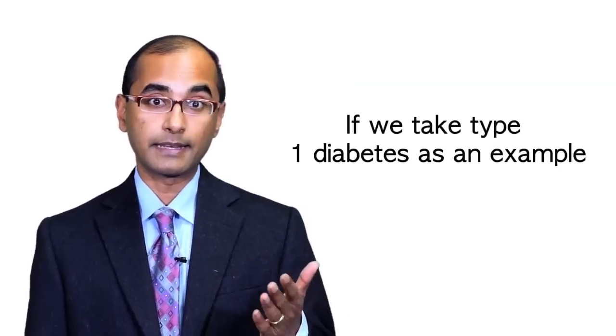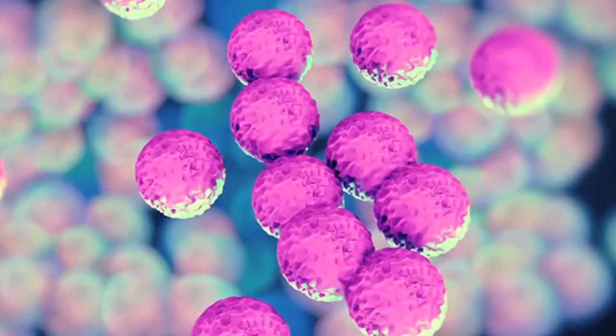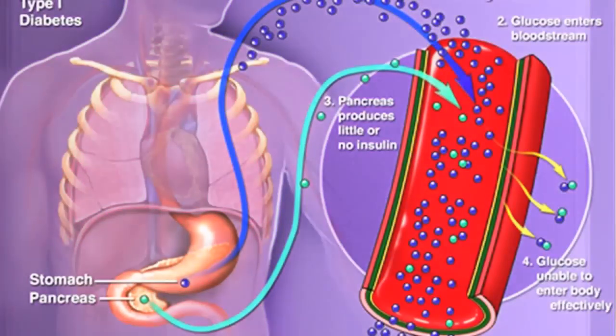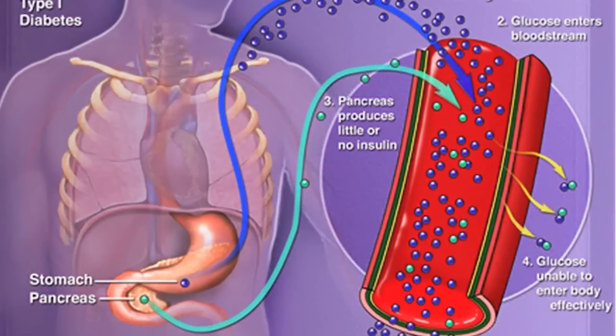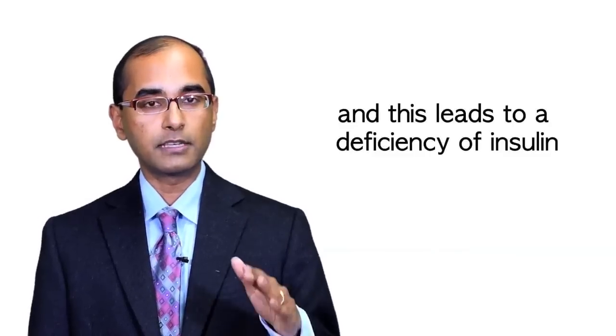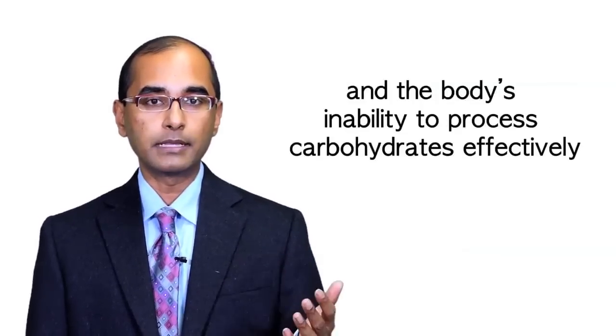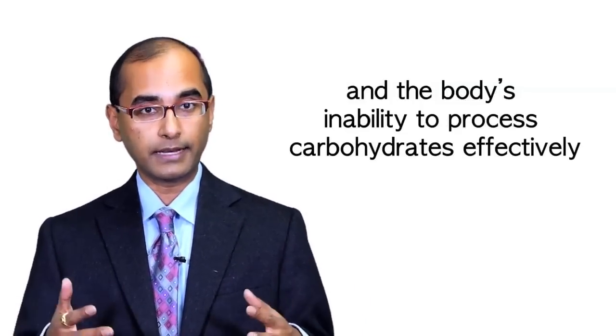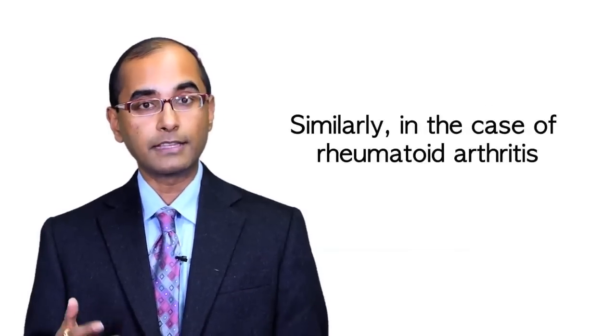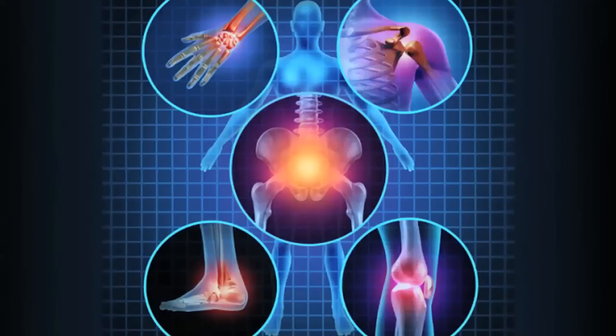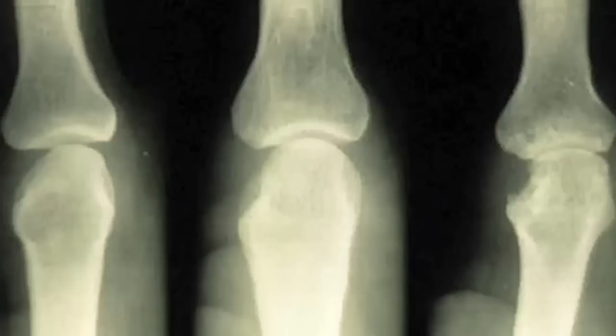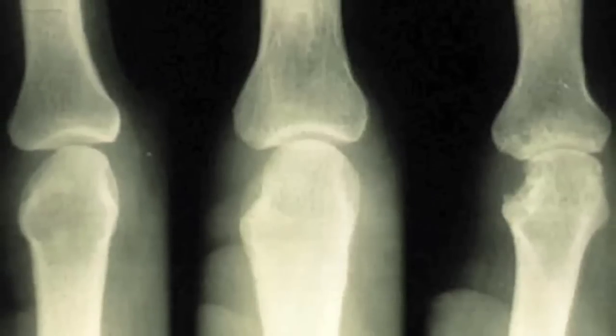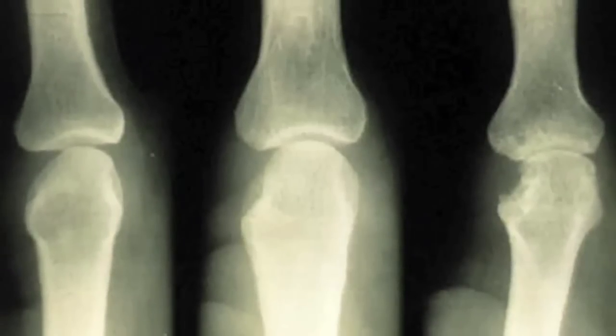So, let's take type 1 diabetes as an example. So, in this condition, the immune system is activated to destroy the cells in the pancreas that produce insulin, which helps with your blood sugar. And this leads to a deficiency of insulin and the body's inability to process carbohydrates effectively. Similarly, in the case of rheumatoid arthritis, the immune system starts attacking the small joints in the body, such as the wrist and the knuckles. And this leads to joint stiffness, joint pain, and decreased flexibility.